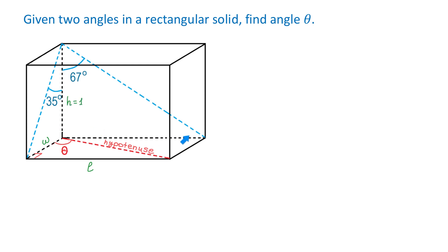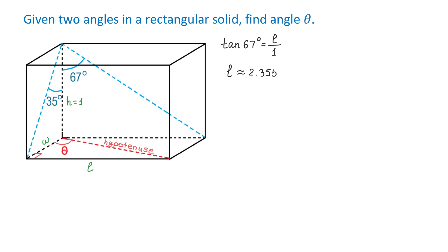In the back triangle, we can find the length using the tangent function. We write that tangent of 67 degrees equals the opposite side, which is the length, divided by the adjacent side, which is the height. So tangent of 67 degrees equals the length divided by 1. Using a calculator, we get that the length is approximately 2.3559.